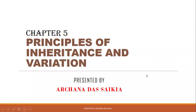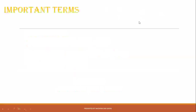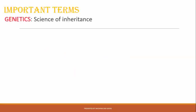Now, Chapter 5: Principles of Inheritance and Variation. We have some important terms to learn in this lesson. Genetics is the branch of science which deals with heredity or inheritance of characters.